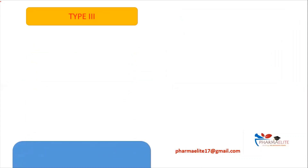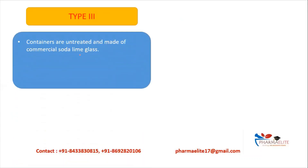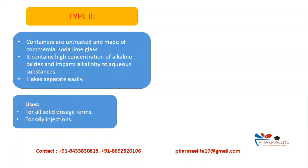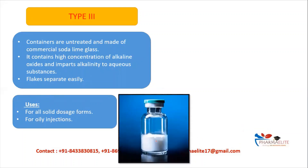Type 3 glass containers are untreated and made of commercial soda lime glass — not treated with sulfur. They contain a comparatively high concentration of alkaline oxides, which impart alkalinity to aqueous substances. Flakes can also separate easily from these glasses. Type 3 is used only for solid dosage forms and for oily-type injections.